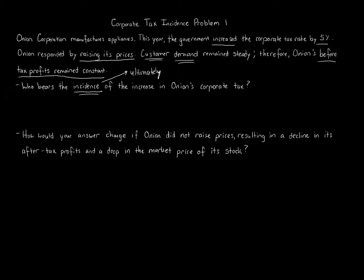So who bears the incidence on the increase in Onion's corporate tax? It's going to be Onion's customers — the customers of the corporation ultimately bear the cost. This happens a lot in our society when tax rates rise. There are different policy elements in tax: administrative simplicity — the ease of administering taxes by the IRS and the ability for taxpayers to complete their returns and understand the law — is one major area.